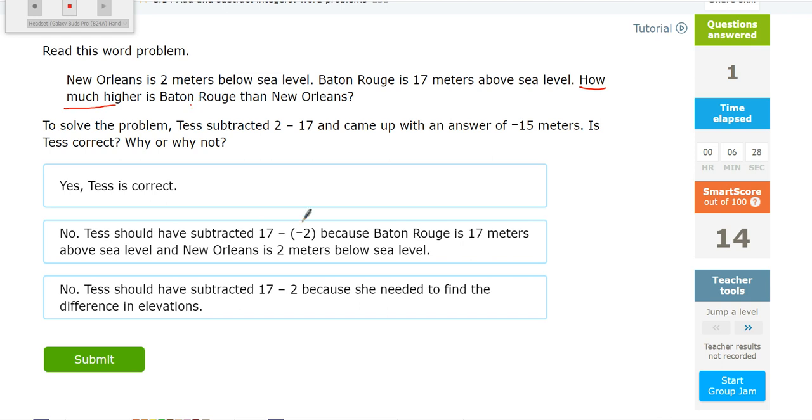But again, to draw my number line to make sure it makes sense, if here is zero, New Orleans is 2 meters below sea level, so that would come down here. Here's negative 2. That means from zero to negative 2, here's the minus 2. Baton Rouge is 17 meters above sea level, so from zero I'm going up to 17, which would be about here. There's my plus 17. 17 meters above means plus 17, 2 meters below means minus 2.